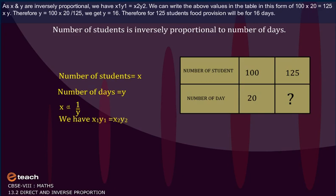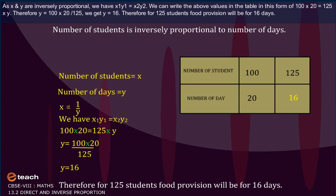We can write the above values in the table in this form: 100 into 20 is equal to 125 into y. Therefore, y is equal to 100 into 20 divided by 125. We get y is equal to 16. Therefore, for 125 students, food provision will be for 16 days.